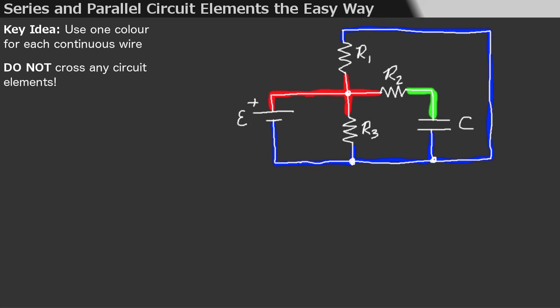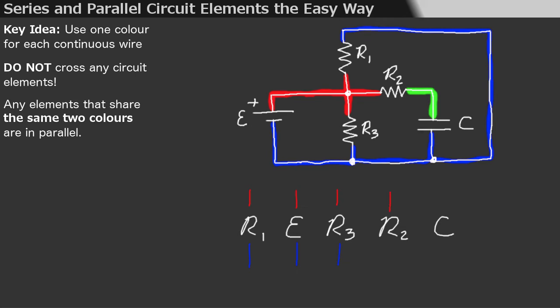Here's the easy part. Any circuit elements that share the same two colors, or wires, are in parallel. So Romeo only needs to identify the pair of colors for each element, and then check whether any elements match colors. In this case, R1, the EMF, and R3 all have red on one side and blue on the other. They share the same pair of colors, which means they share the same pair of wires, and they are in parallel.